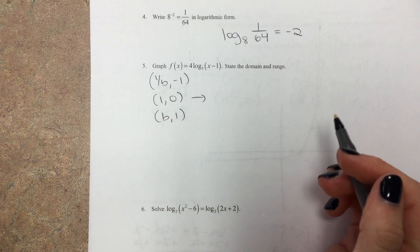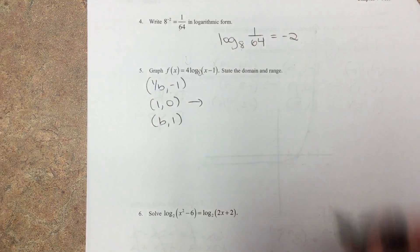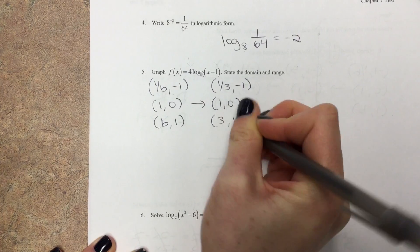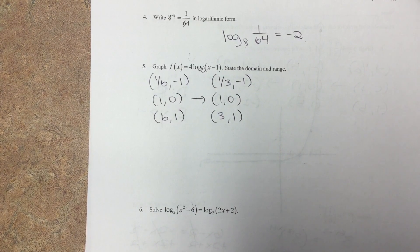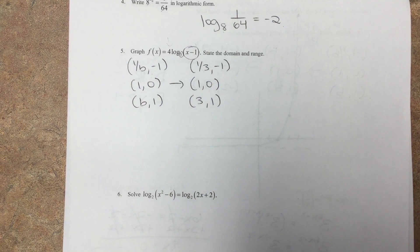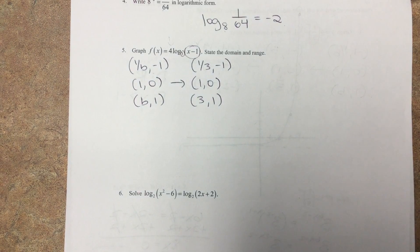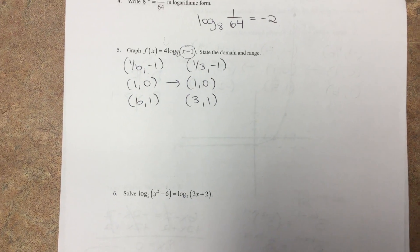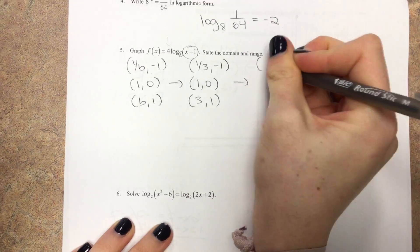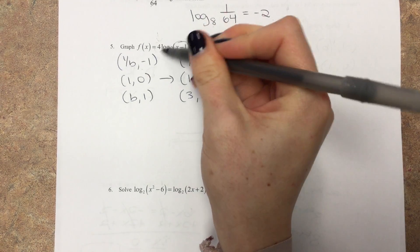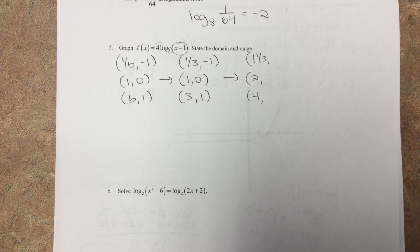For this logarithmic graph, the base is the little subscript — it's three. So my original points are one-third, negative one; one, zero; and three, one. Those are the original points before any transformations. We've got two transformations here. This x minus one is on the inside of the log function — that affects x, and x always does the opposite. So how am I changing my x values? Adding 1. The whole graph shifts to the right one unit. Adding 1 to all x values: one-third becomes one and one-third, zero becomes two, and two becomes four. The 4 on the outside is a vertical stretch — it multiplies all my y values.